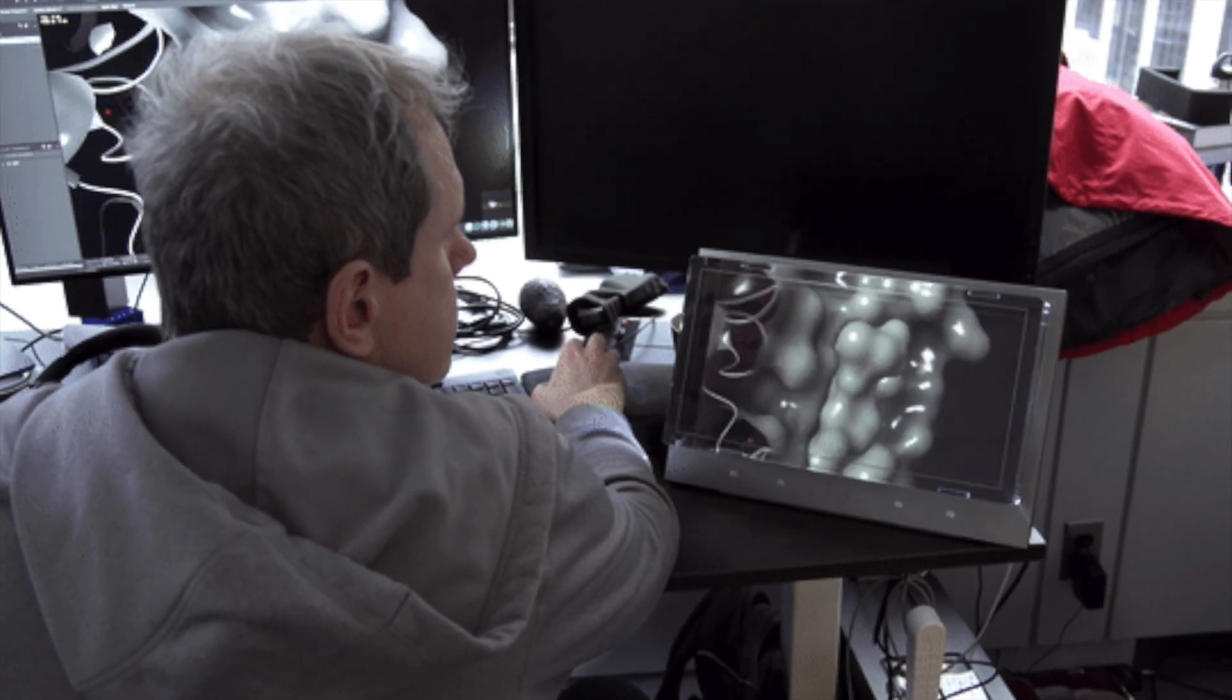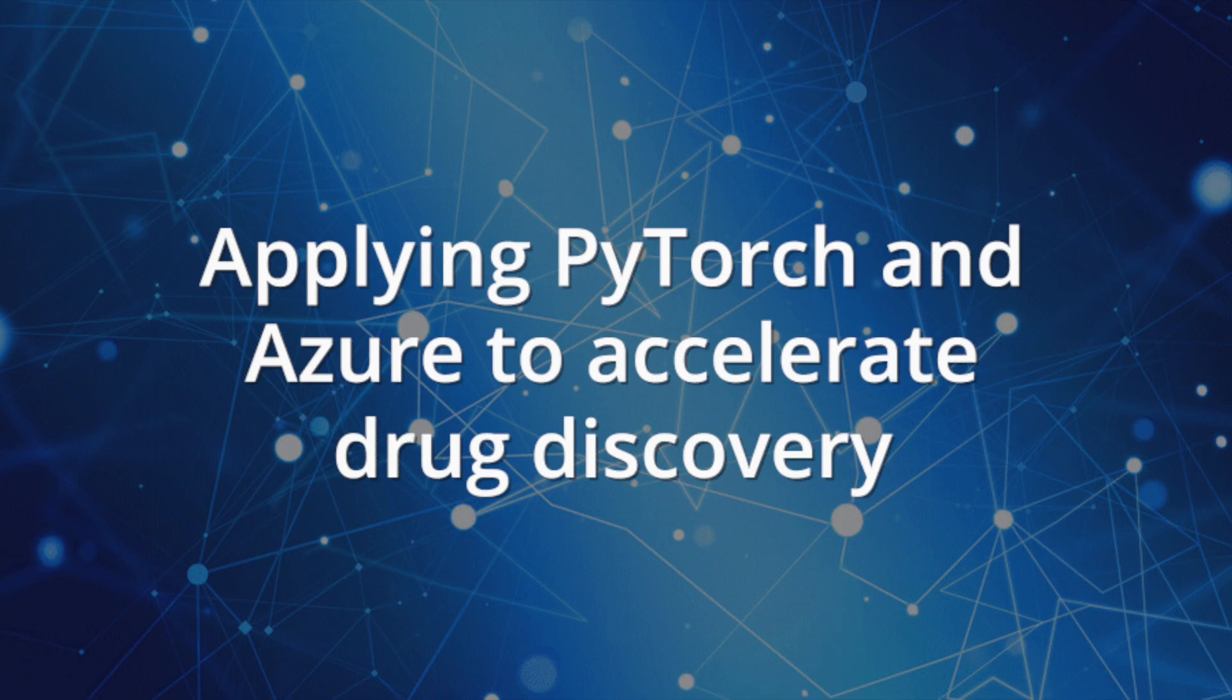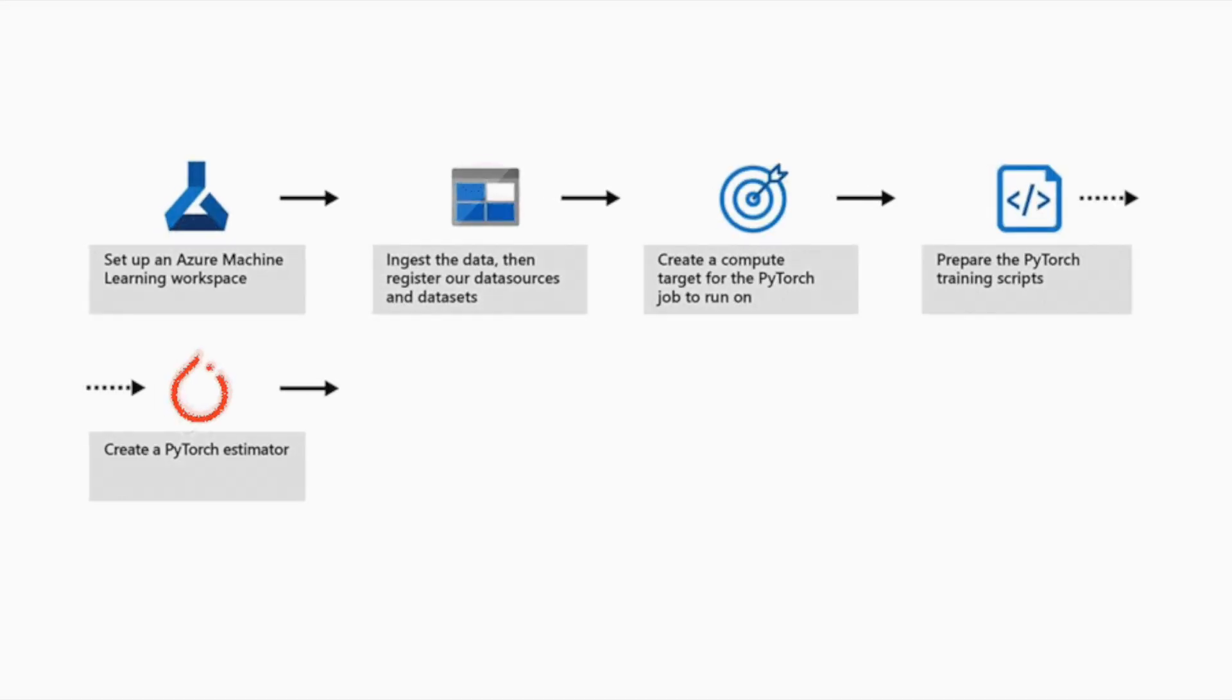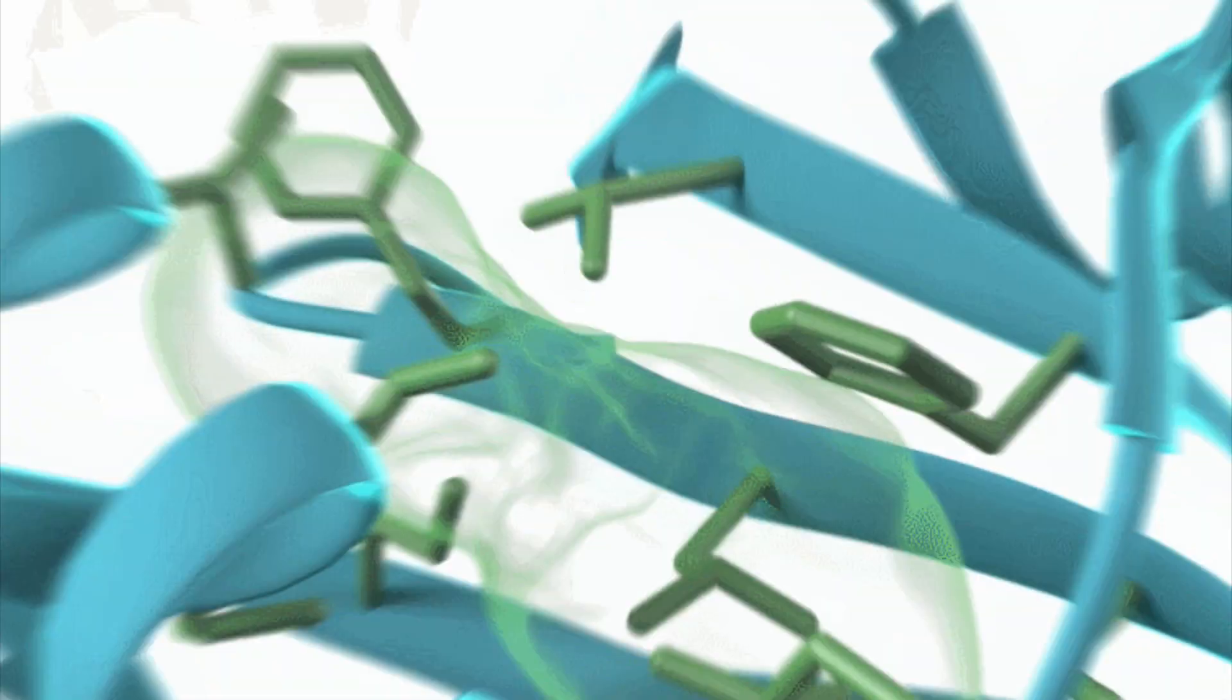In Silico Medicine, a Hong Kong-based biotech startup with more than $400 million in funding, created the drug INS018-055 as a treatment for idiopathic pulmonary fibrosis.